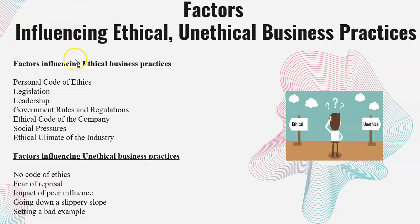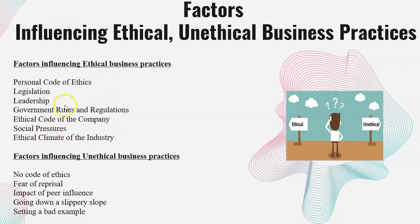Factors influencing ethical and unethical business practices include: first, personal code of practice; legislation; leadership; government rules and regulations; ethical code of the company; social pressures; and ethical climate of the industry. These are some of the aspects that are extremely important.